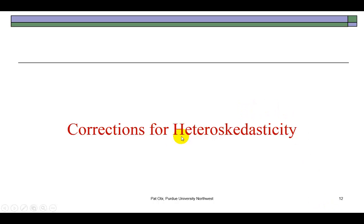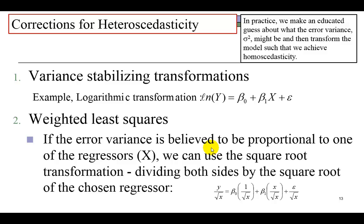In this presentation on heteroscedasticity, I show a couple of corrections to fix this problem of unequal error variance. The two are general variance stabilizing transformations of which the logarithmic transformation is an important one, and the other is a generalized least squares approach that's based on weighted least squares.